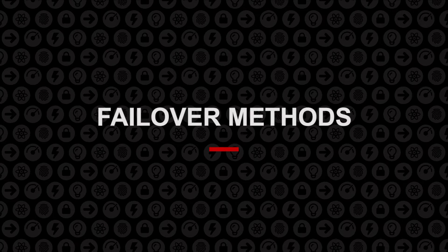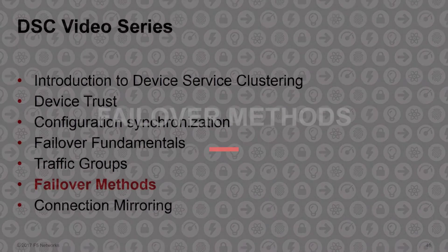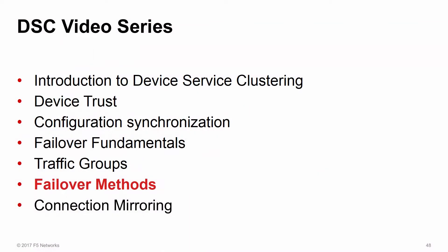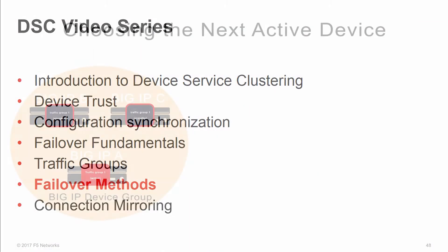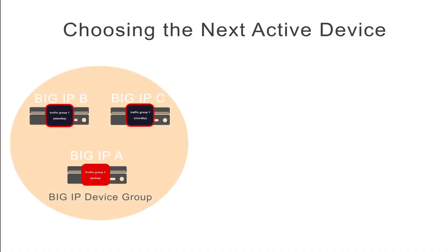This video explains the failover methods available within DSC. When working with traffic groups, you can control how the Big IP system chooses the next active device for failover. There are three different criteria or failover methods that the Big IP system can use to choose the next active device for a traffic group.